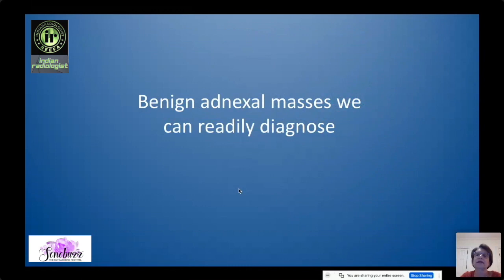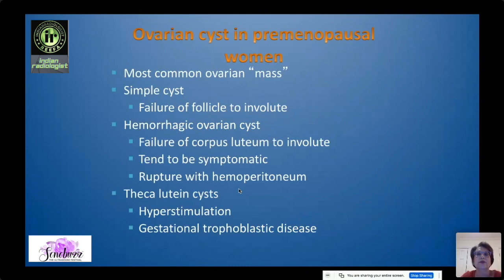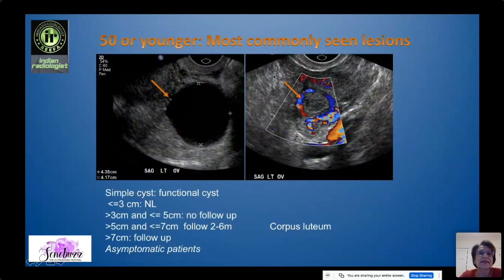The first benign adnexal mass we can readily diagnose is an ovarian cyst in a premenopausal woman — really an ovarian lesion rather than a mass. You have simple cysts, which are basically a failure of the follicle to involute, or hemorrhagic cysts, thought to be failure of the corpus luteum to involute. These tend to be symptomatic. The most common lesion in women 50 or younger is a simple anechoic cyst. If it's less than three centimeters it's considered normal. Between three and five centimeters, SRU guidelines suggest no follow-up is needed in premenopausal women.